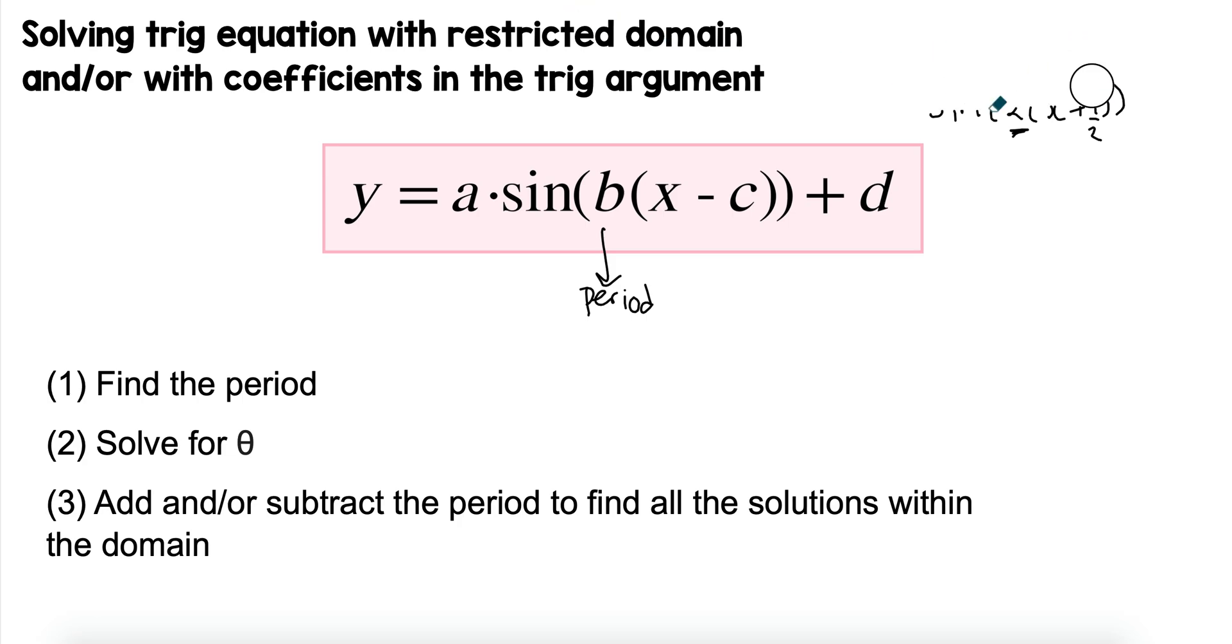What we're going to do is solve these two types of questions, it's always the same three steps. You're going to find the period. The period can be found by taking 2π divided by b, or if you're working in degrees, it's 360 divided by b.